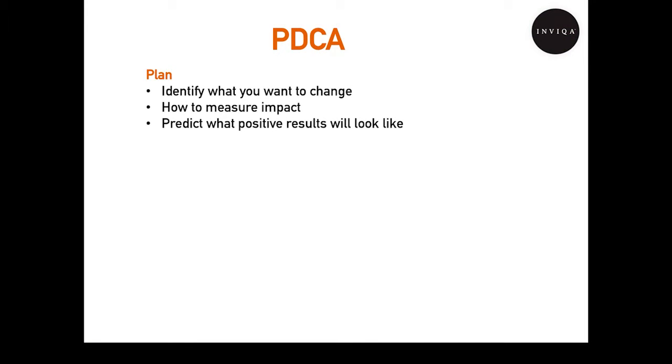To start dealing with your legacy codebase, you need to begin a program of continuous improvement, or Kaizen. The term Kaizen is derived from two Japanese characters: Kai, meaning change, and Zen, meaning continuous improvement. Eliminating waste in the value stream is the goal of Kaizen and a core lean principle. So, you plan: create a plan for change, identifying specifically what you want to change and how to measure the impact. Define the steps you need to make it measurable, and predict the positive result you are looking for.